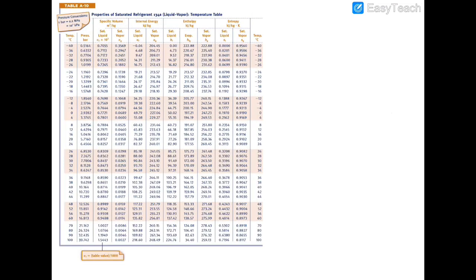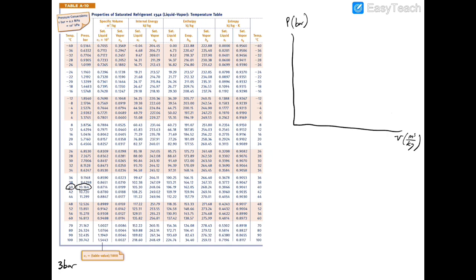Turning to Table A10 with a temperature of 40°C, the saturation pressure is 10.164 bar. We were given a pressure of 3 bar, so we want to figure out what phase we're working with — superheated, compressed liquid, or two-phase. Let's draw a PV diagram with specific volume on the x-axis in cubic meters per kilogram and pressure on the y-axis in bar.